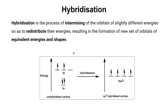From VSEPR theory we know that molecules have a particular geometry, but why does that geometry occur? It can be explained with hybridization. Hybridization is the process of intermixing of orbitals of slightly different energies so as to redistribute their energies, resulting in the formation of a new set of orbitals of equivalent energies and shapes. This can be explained with carbon, whose electronic configuration is 1s2, 2s2, 2p2.